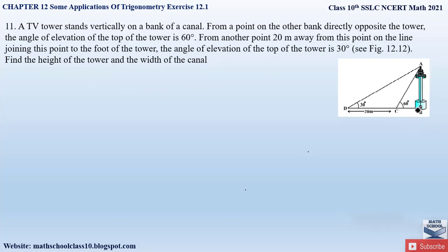There is a TV tower AB on the bank of the canal — 'bank of the canal' means at the edge of the canal. From B to C is the canal. Point B is one bank of the canal and point C is the other bank. From point C, the angle of elevation to the top of the tower is 60°. From another point D, which is 20 meters away from C, the angle of elevation to the top of the tower is 30°.